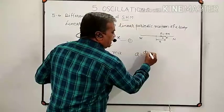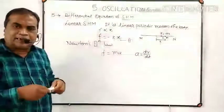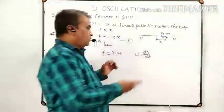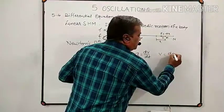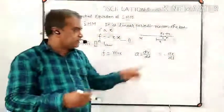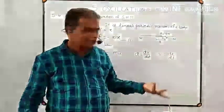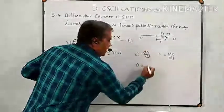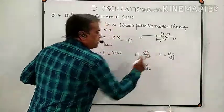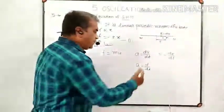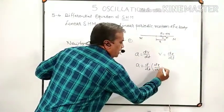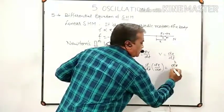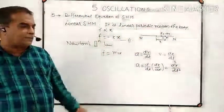By definition, acceleration is the rate of change of velocity, and velocity is the rate of change of displacement. If x is the displacement, then velocity is dx/dt. So acceleration equals d/dt of dx/dt, which can be written as d²x/dt².